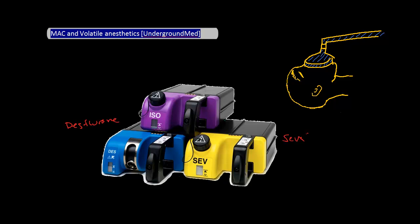Nitrous oxide is another volatile gas you may have heard of, but this is typically used for induction in kids or to aid the other three gases during wake-up.